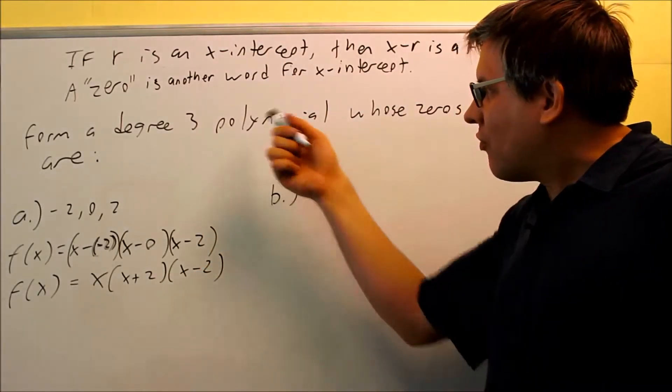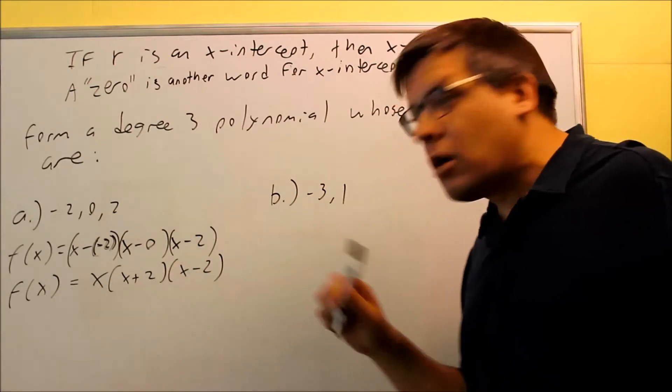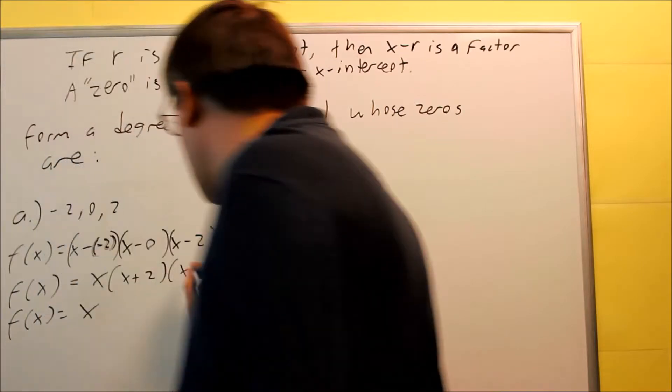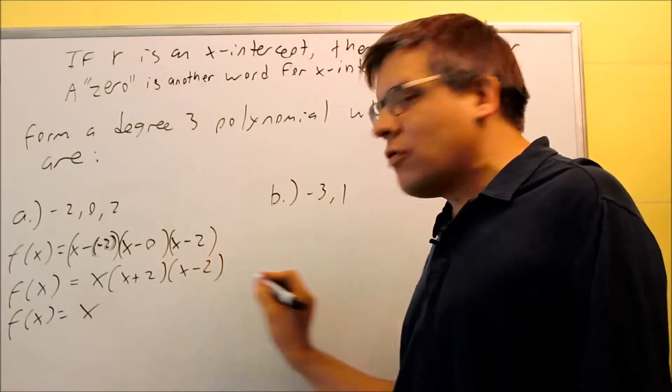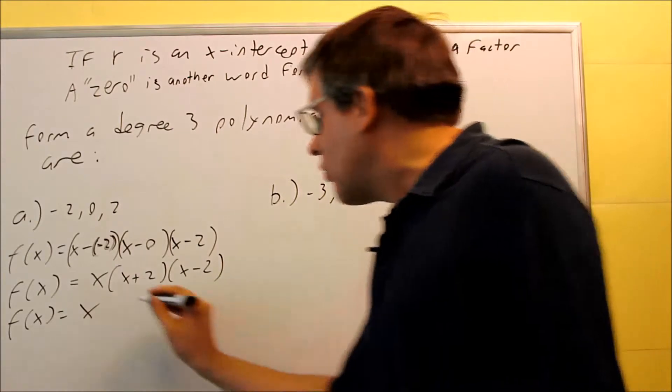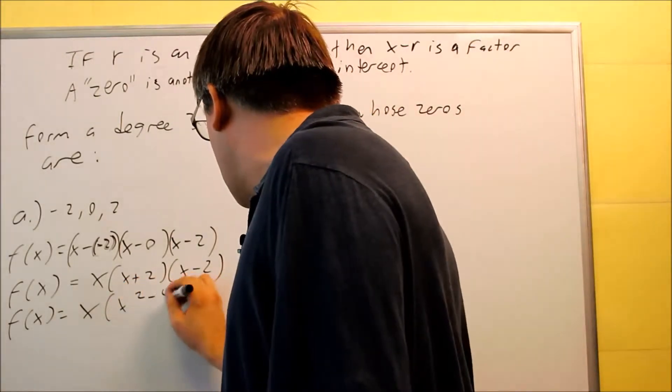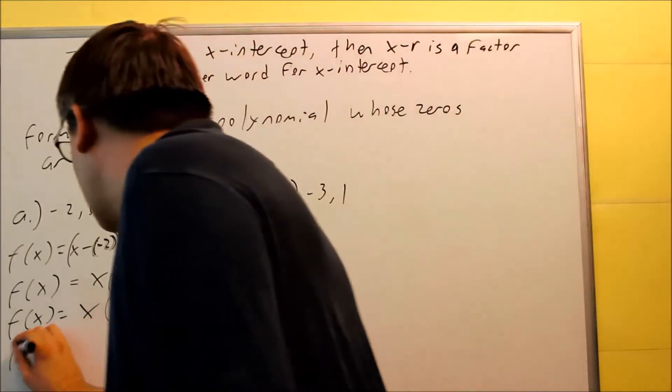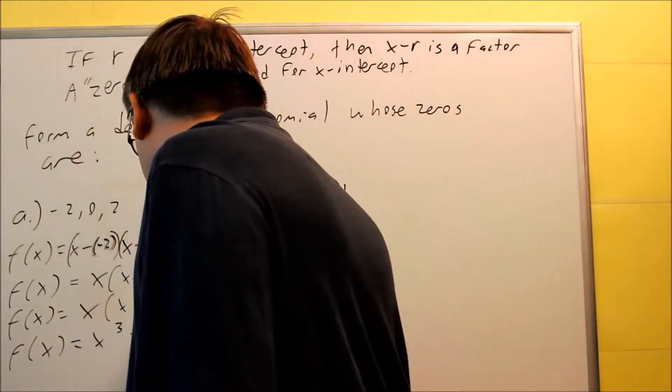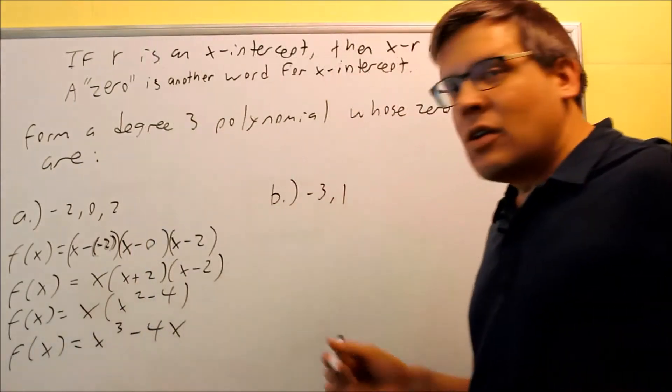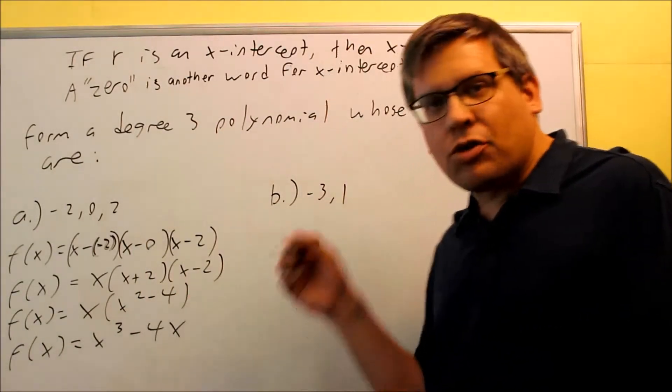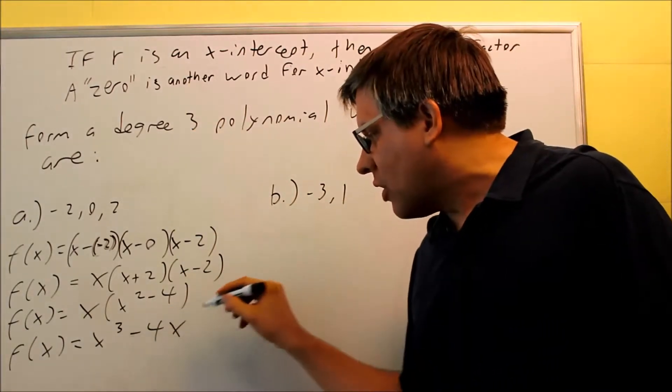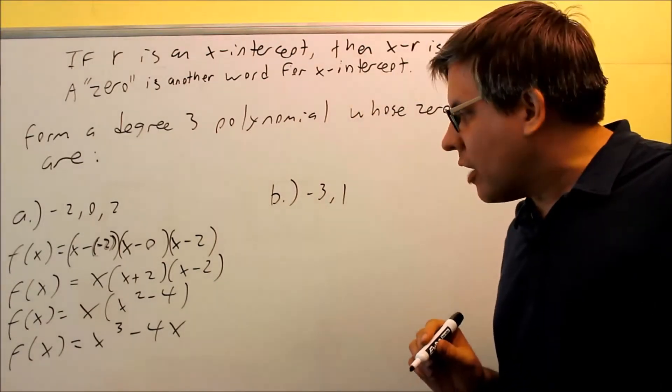So to see and verify that it really is a degree 3, I'm going to go ahead and multiply that through. So f of x is going to be, I'm going to do the first two, x times these two first. That's x plus 2, x minus 2. If you multiply those, that's difference of squares. You'll get x squared minus 4. Then we'll multiply that through by x, and we get x cubed minus 4x. So now you can see there that the highest power there would be 3, so it does meet the condition.